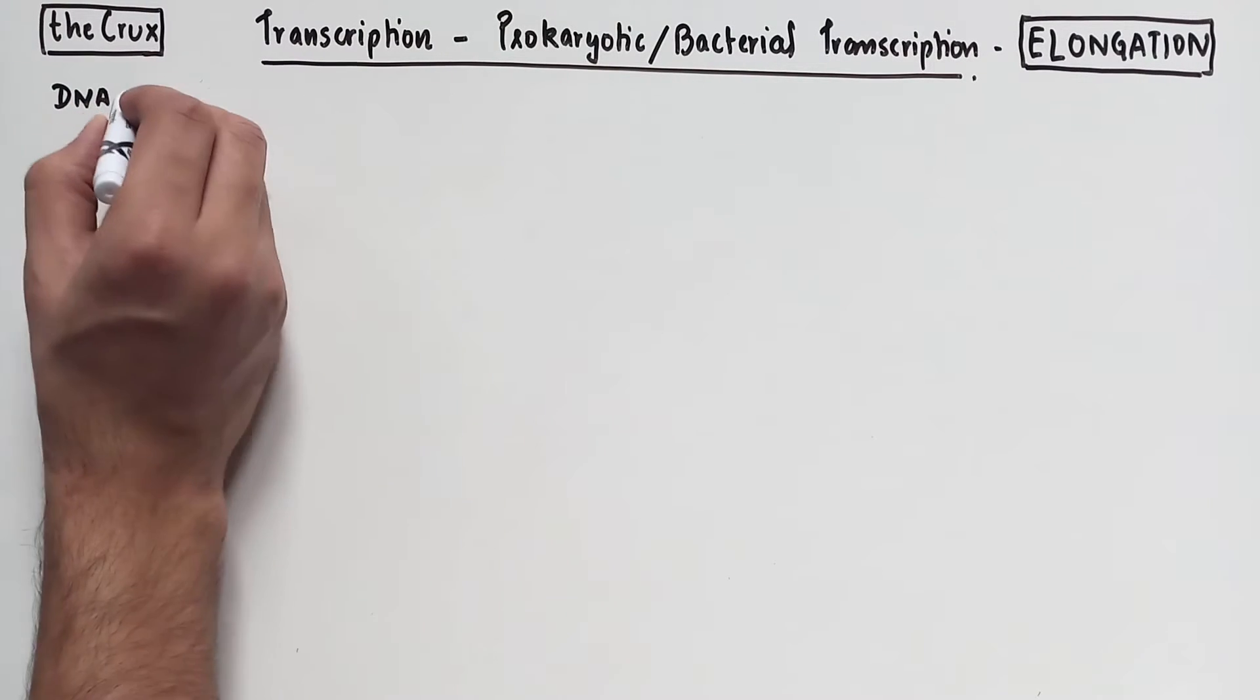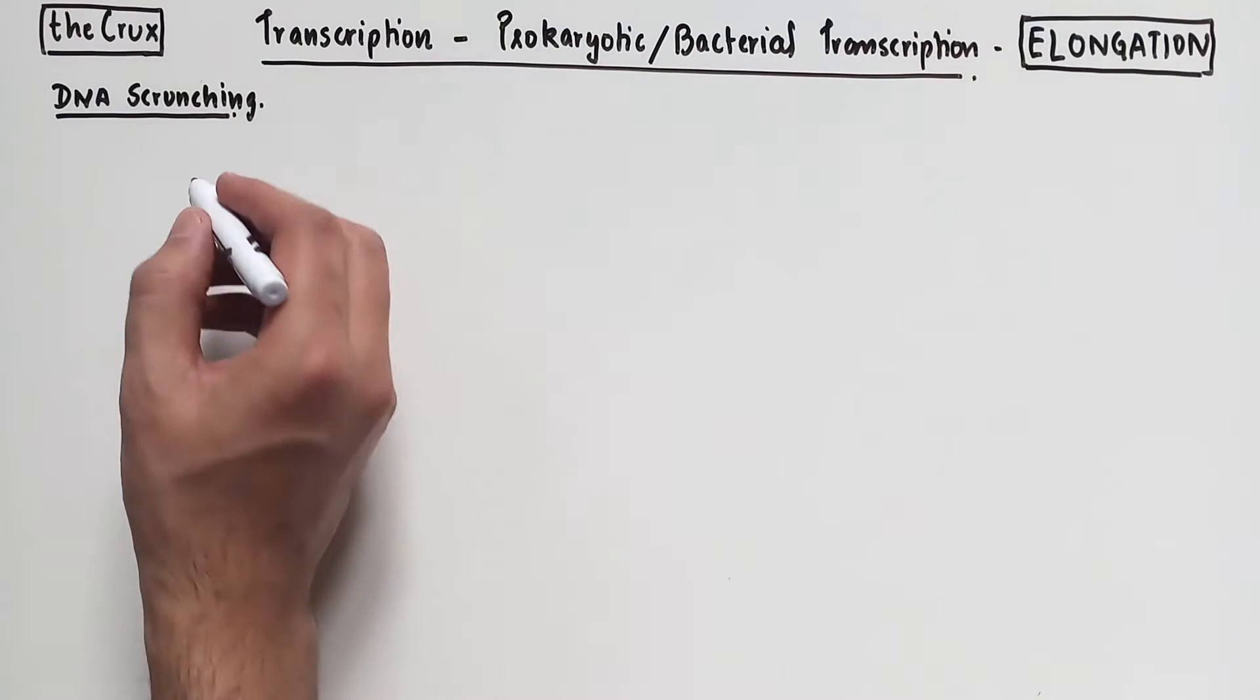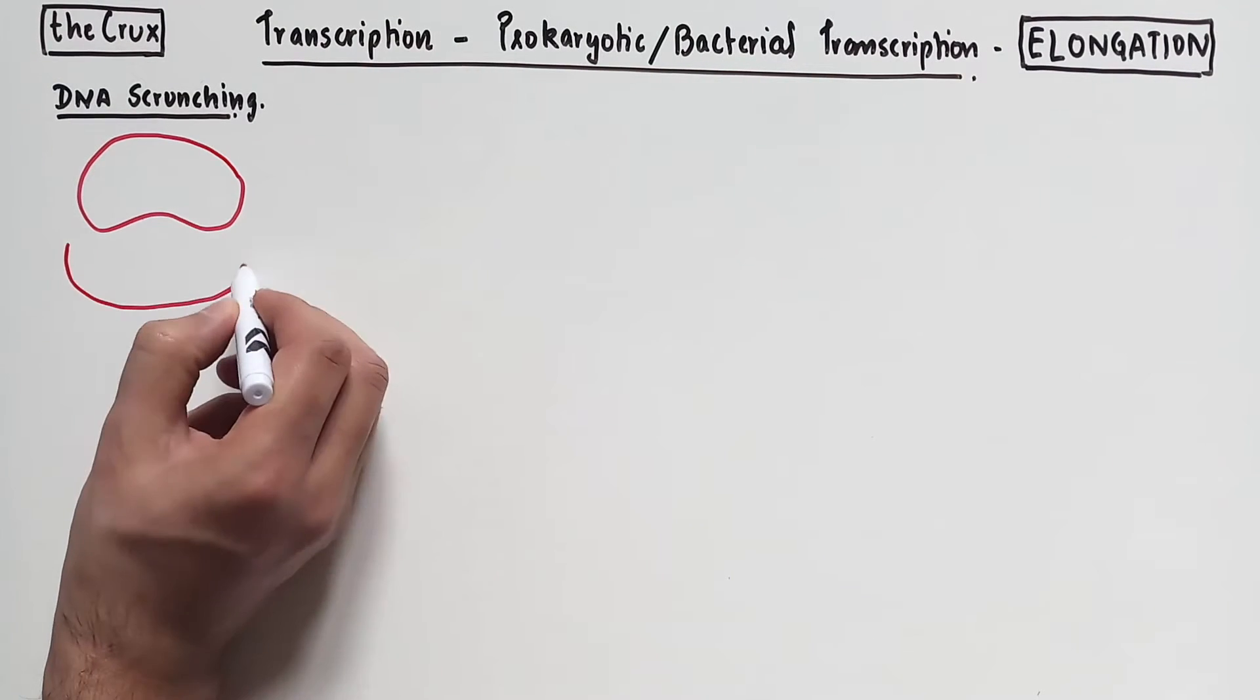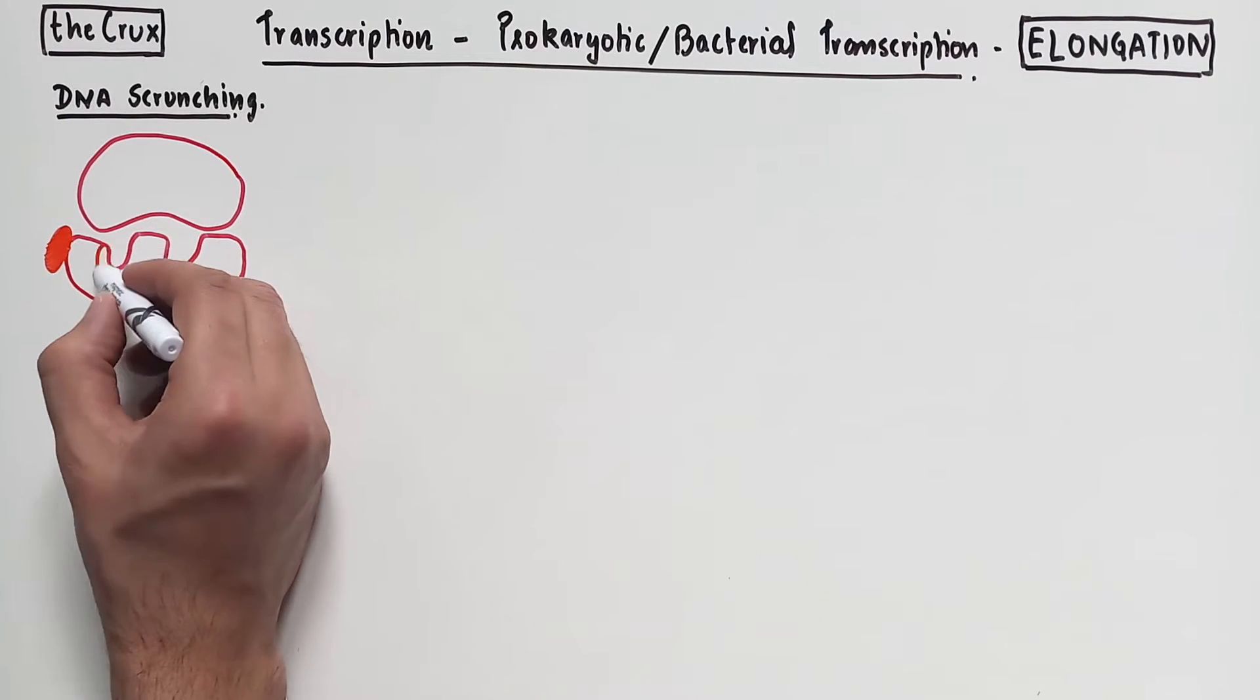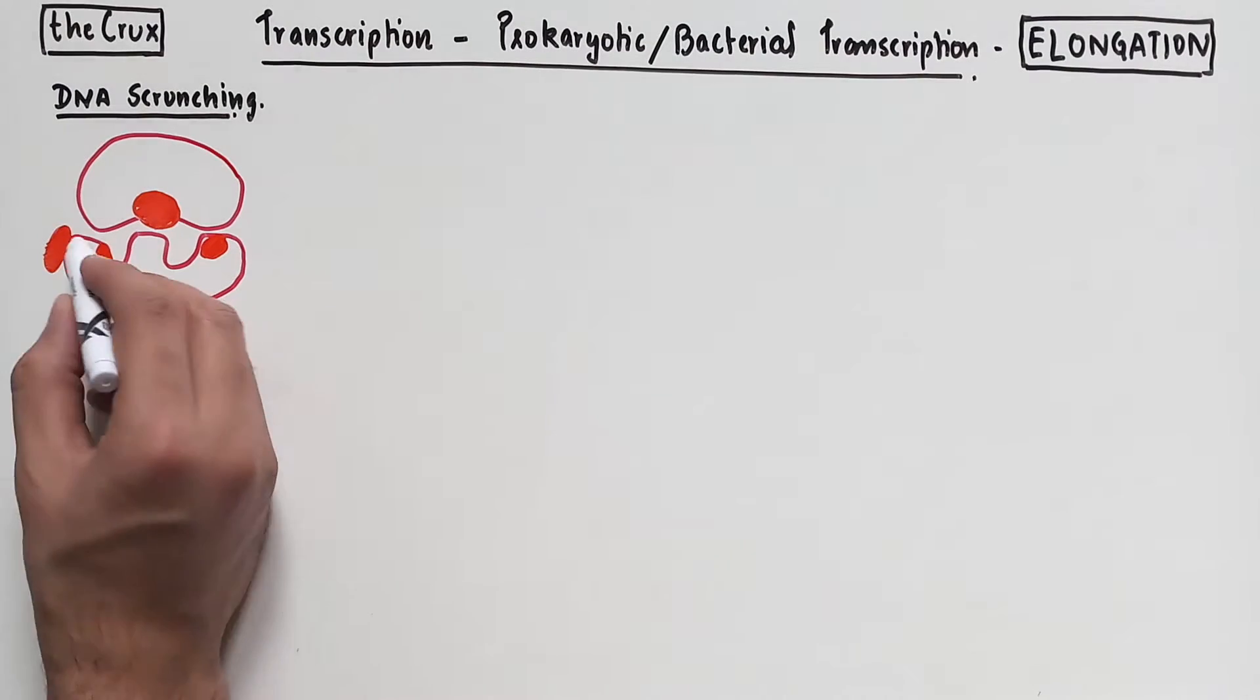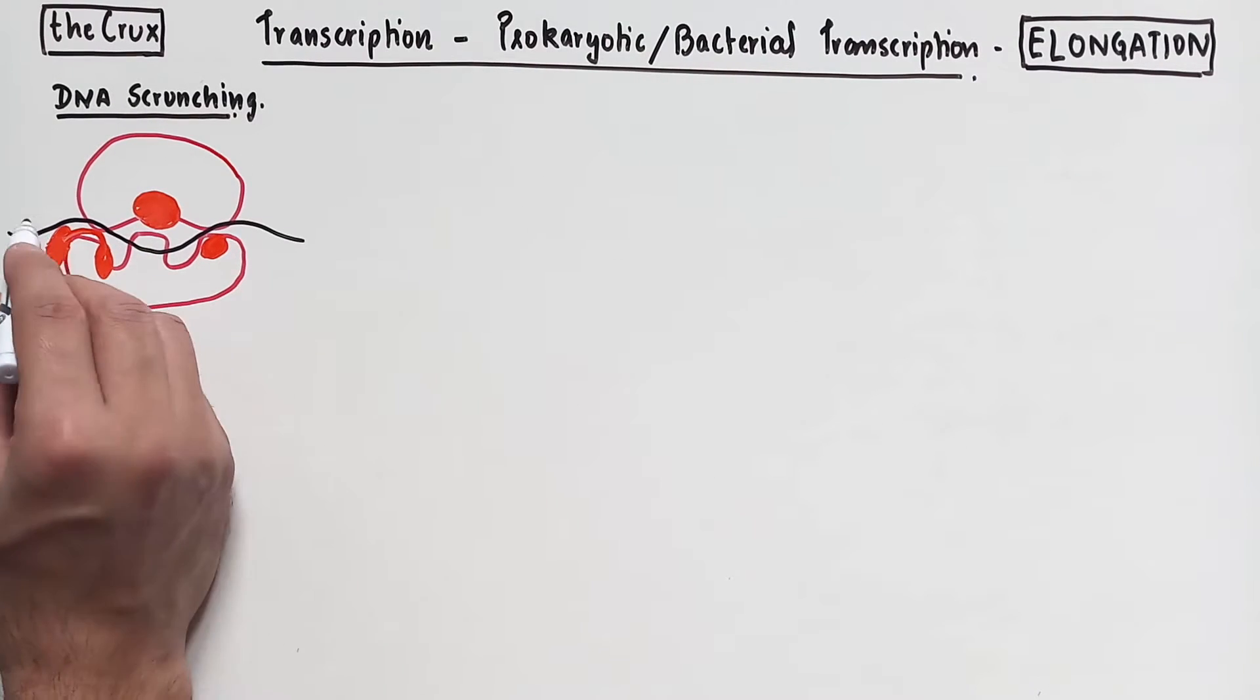In the last video when we discussed initiation, we said that DNA scrunching is involved in transition from the initiation process to the elongation process. Let's draw out the ternary complex. If you haven't watched the transcription initiation video, I highly recommend that you do so before proceeding. It'll help you understand the DNA scrunching better.